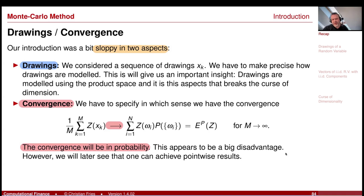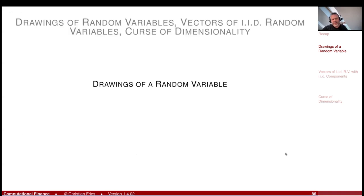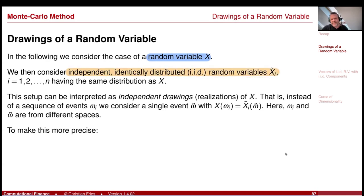Let's go to the first point and consider drawings of random variables — vectors of IID random variables in R^D and the curse of dimensionality. Recall how a drawing is modeled. I consider a random variable X, and I would like to model independent identically distributed (IID) random variables X̃_i. The X̃_i should have the same distribution as X.